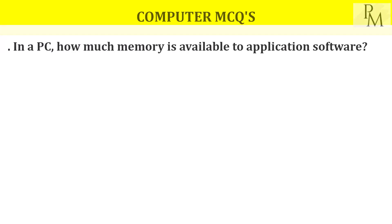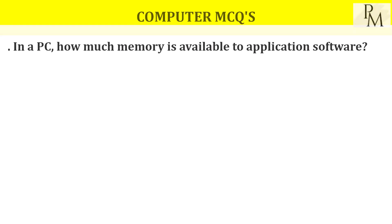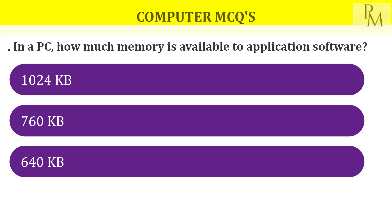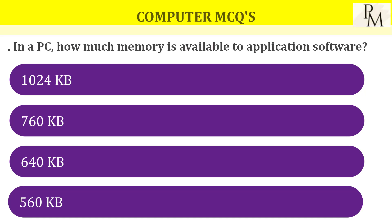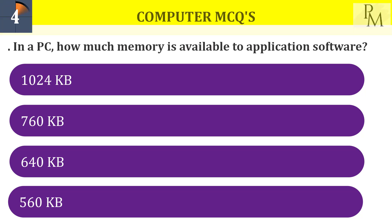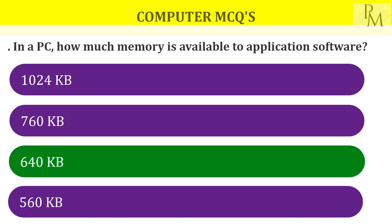In a PC, how much memory is available to application software? The amount of memory required — options include 1024 KB, 560 KB, and 640 KB. For application software, 640 KB is required.